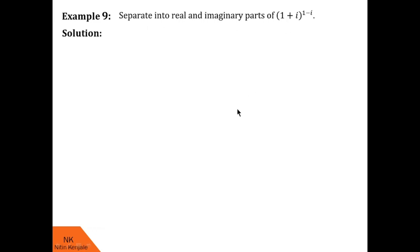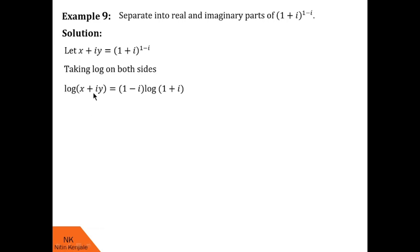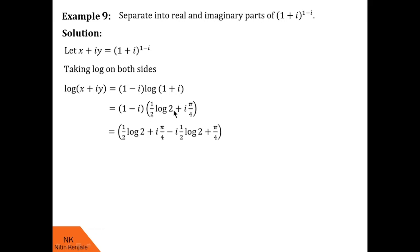In example 9, we have to separate into real and imaginary parts (1+i) raised to (1-i). We let (1+i)^(1-i) equal x+iy. Taking log on both sides: log(x+iy) equals (1-i) into log(1+i). According to the principal value, log(1+i) equals (1/2)log 2 + i(pi/4). Multiplying the two brackets: we get (1/2)log 2 + i(pi/4) minus i(1/2 log 2) minus i squared (which is plus 1) times pi/4. Separating real and imaginary parts: real terms are (1/2)log 2 + pi/4, and imaginary terms are pi/4 minus (1/2)log 2.